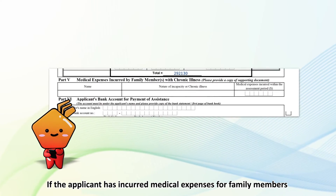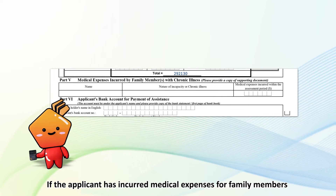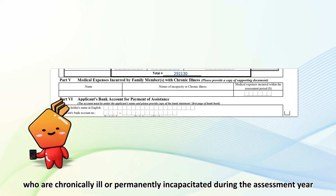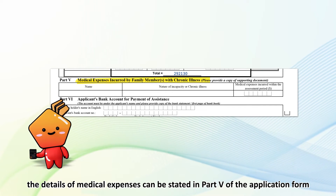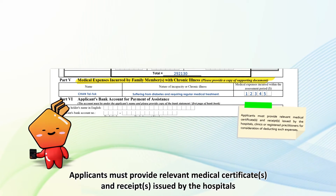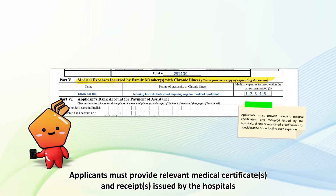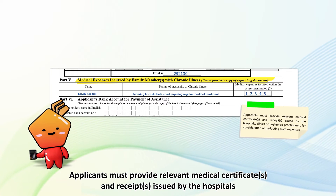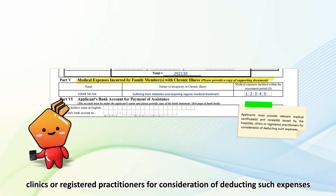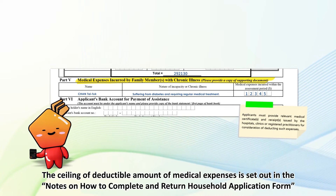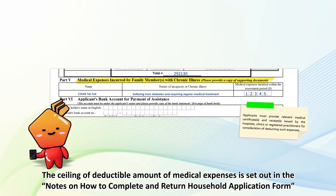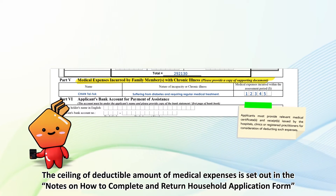If the applicant has incurred medical expenses for family members who are chronically ill or permanently incapacitated during the assessment year, the details of medical expenses can be stated in Part 5 of the application form. Applicants must provide relevant medical certificate or certificates and receipt or receipts issued by the hospitals, clinics, or registered practitioners for consideration of deducting such expenses. The ceiling of deductible amount of medical expenses is set out in the Notes on How to Complete and Return Household Application Form.